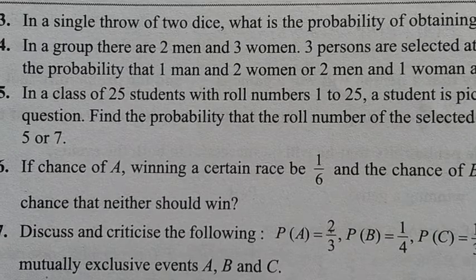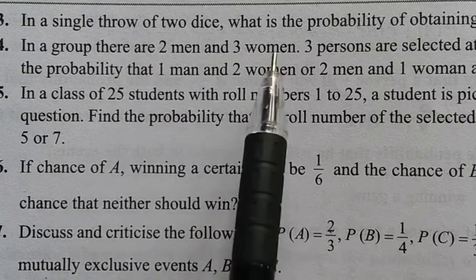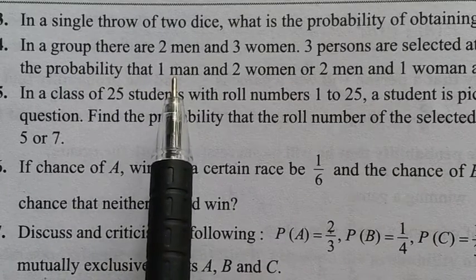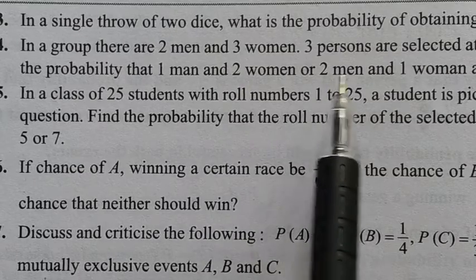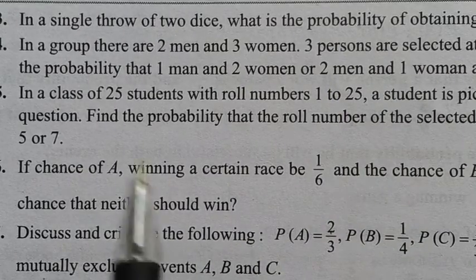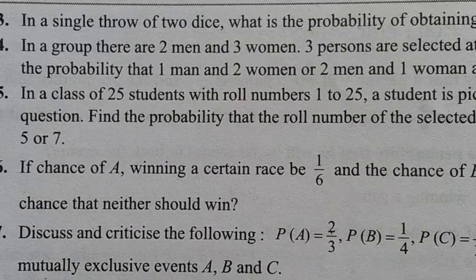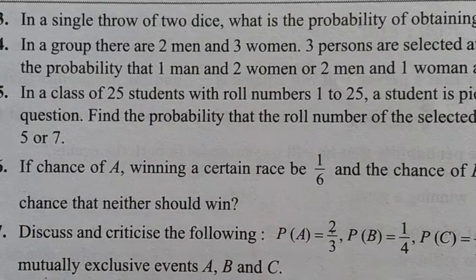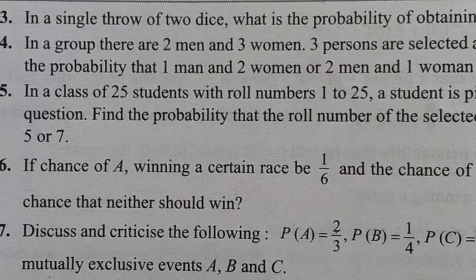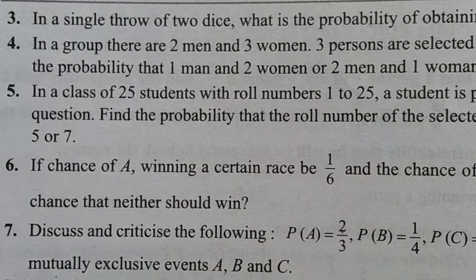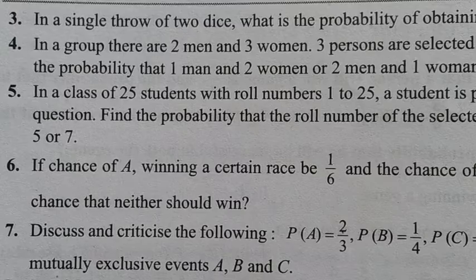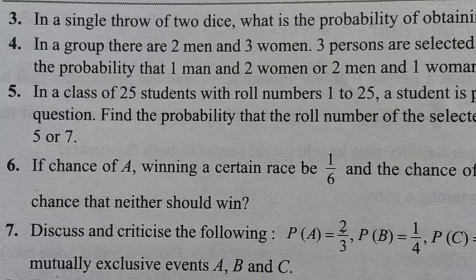Question number 4: In a group there are 2 men and 3 women. Three persons are selected at random from the group. Find the probability that either one man and two women are selected, or two men and one woman are selected. This question uses combinations (permutation and combination concepts).